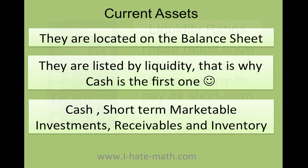Let's talk about a couple of concepts before we do the formula. First of all, current assets — very important. You need to know that they are located on the balance sheet. Also, they are listed by liquidity. That is the reason why cash is the first one. Have you noticed that cash is always on top? Well, because it's one of the most liquid current assets. Also, the most common current assets are going to be cash, short-term marketable investments, receivables, and inventory.